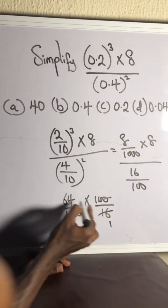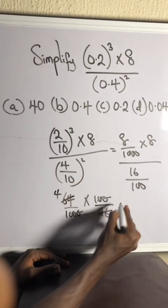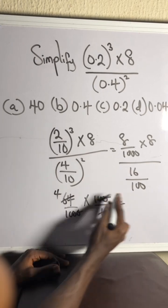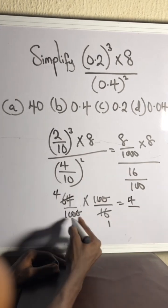16 here 1, 16 here 4, okay. And now I'm left with 4 times 1 is actually 4 over 10.